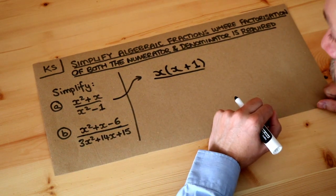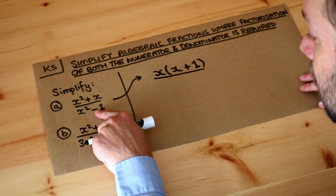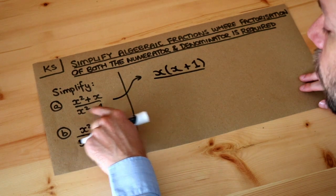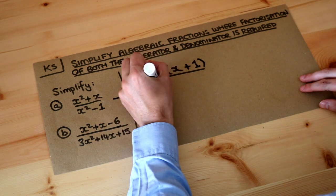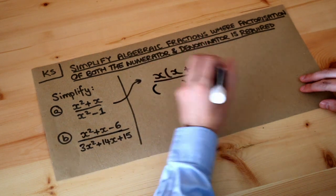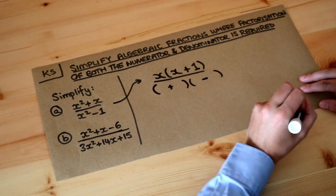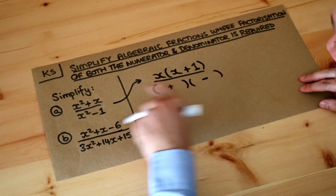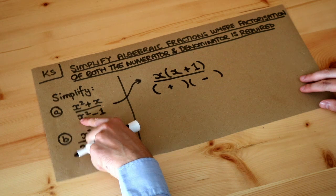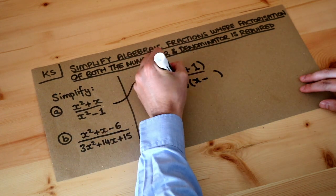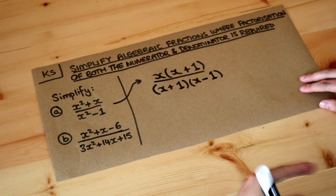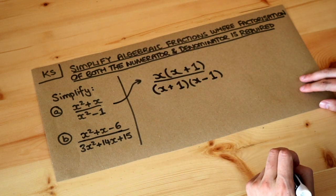What about the bottom? Well remember this is a special form called the difference of two squares, so it's a difference, a subtraction of two squared things. Well that's x squared and that's 1 squared. And remember the way we factorize that is to have two brackets, one with plus, one with minus, and then we do the square root of each term. So the square root of the first term x squared is x, and the square root of one is just one. And if you don't know how to do this, then do look at my video on factorizing the difference of two squares first.